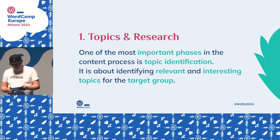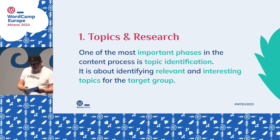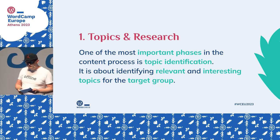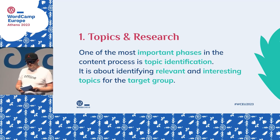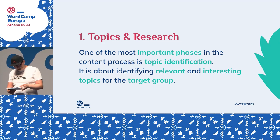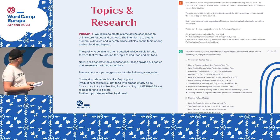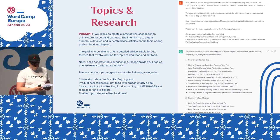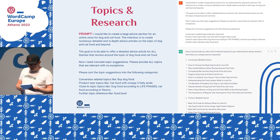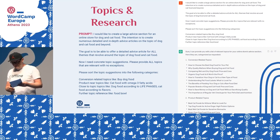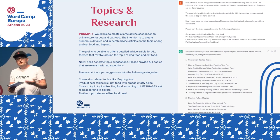First one: topic search. This is one of the important parts in the content process — to find relevant and interesting topics for you and for your target group. I send to ChatGPT the main goal: the intention to create numerous detailed and in-depth advanced articles on the topic of dog and cat food and beyond. This is my example.